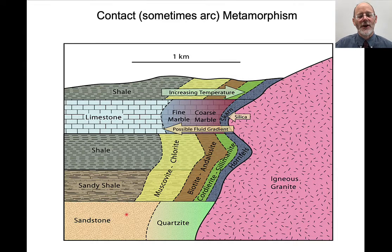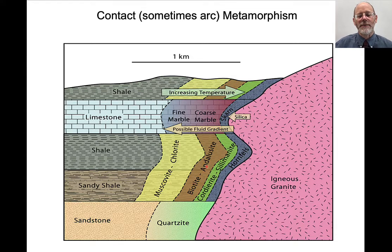A sandstone, when it's metamorphosed, forms a quartzite. And it is this distribution of minerals — muscovite, chlorite, biotite, andalusite, quartzite, sillimanite, and so on — that tells us something about the heat distribution around these intrusions.